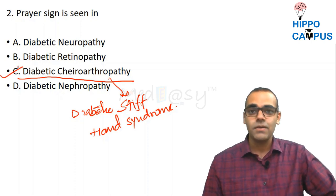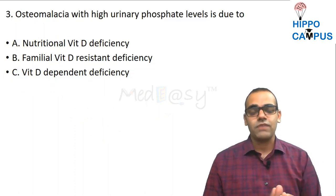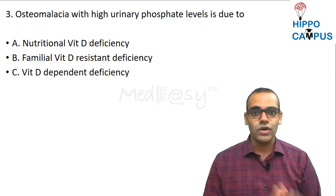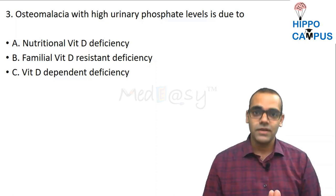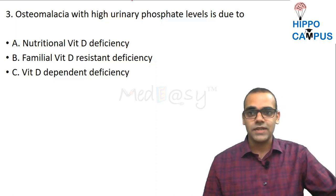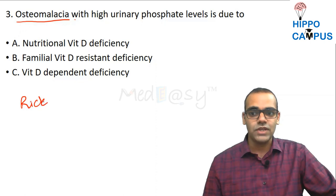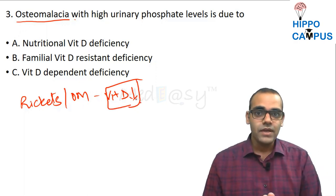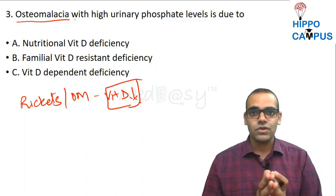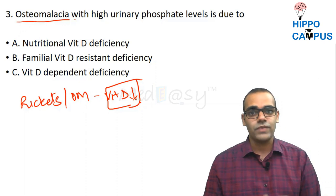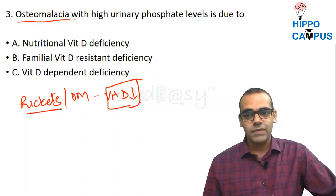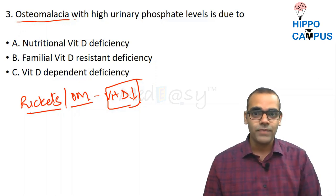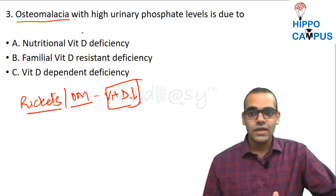Question 3: Osteomalacia with high urinary phosphate levels is due to which type — nutritional, vitamin D resistant, or vitamin D dependent? Before answering, let us understand rickets and osteomalacia. The common pathophysiology begins with vitamin D deficiency. Rickets occurs in the pediatric age group whereas osteomalacia is seen in adults, but both involve vitamin D deficiency.